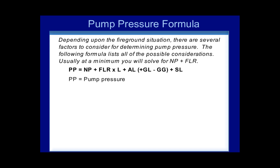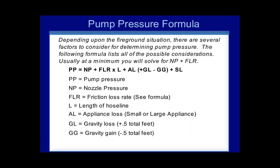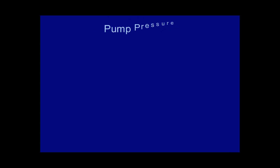PP, or pump pressure, equals NP, or nozzle pressure, plus FLR, or the friction loss rate, times L, or length, plus AL, or appliance loss, then plus or minus gravity loss or gravity gain, plus SLR, or system loss.